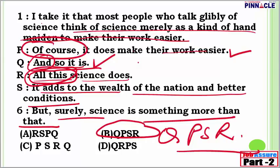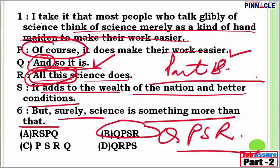This was part 18 of para jumbles — extremely important. Now we shall move on to part 19 and 20. All these video lectures are a part of our program known as Job Assure 2, which is a specially designed program for tier 2. I wish you all the best. Thank you.